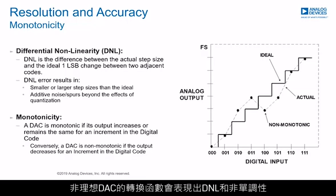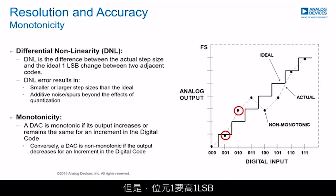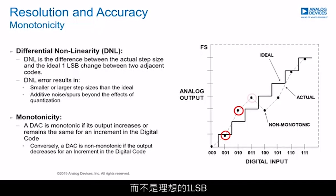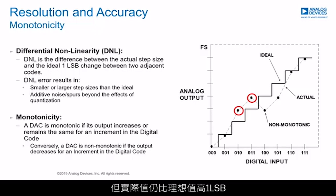The transfer function of a non-ideal 3-bit DAC shows DNL and non-monotonicity. In this example, bit 3 is of correct step size and sits at the ideal value. Bit 1, however, is 1 LSB high and increases by 2 LSB instead of the ideal 1 LSB between code 001 and 010. The code transition from 010 to 011, which turns on bit 1, is again correct step size, but the actual value remains 1 LSB above ideal.